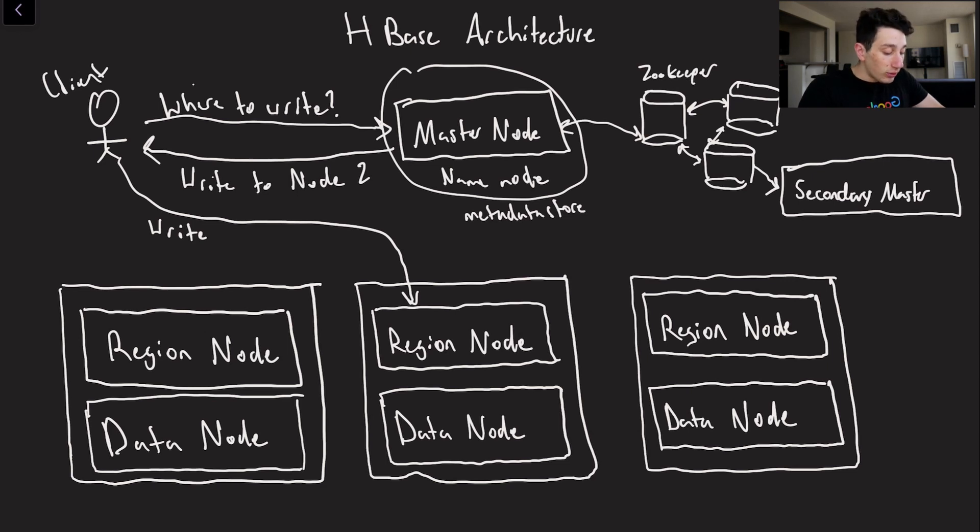The master node will then respond with write to node 2. So in this case node 2 would effectively be the partition that the client should be writing to, and then the client is going to execute that write over here to node 2.